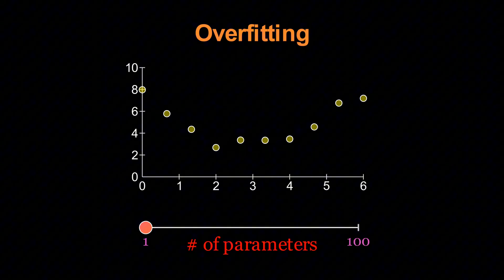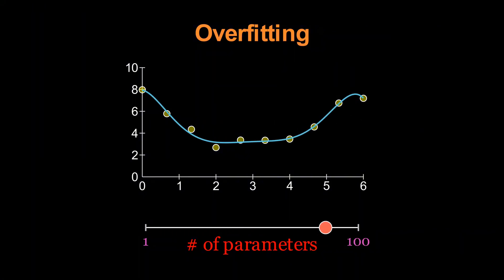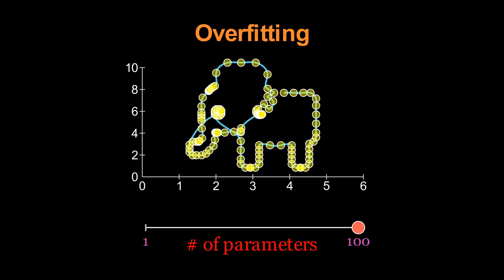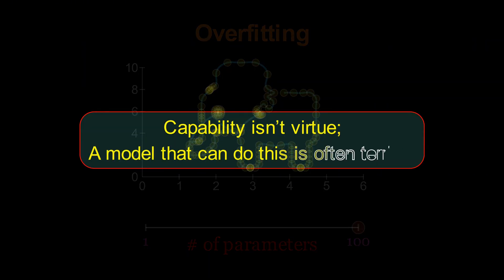It illustrates how, if we give a model too many free parameters, it can mimic almost any data set, even something as absurd as the outline of an elephant. But of course, a model that can do this is not necessarily a good model. In fact, it's usually a terrible one.